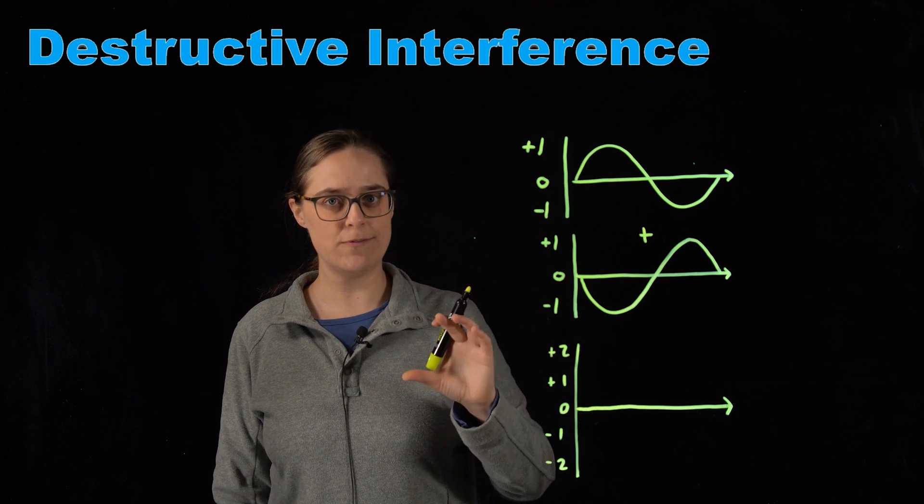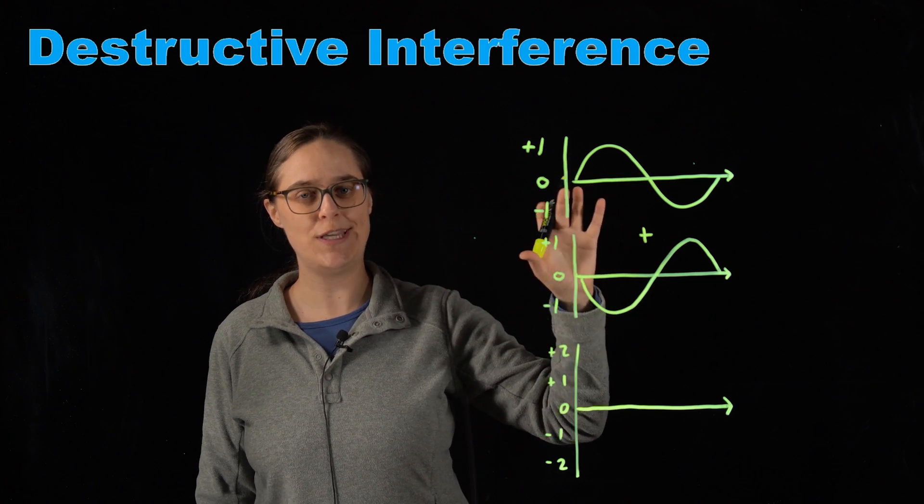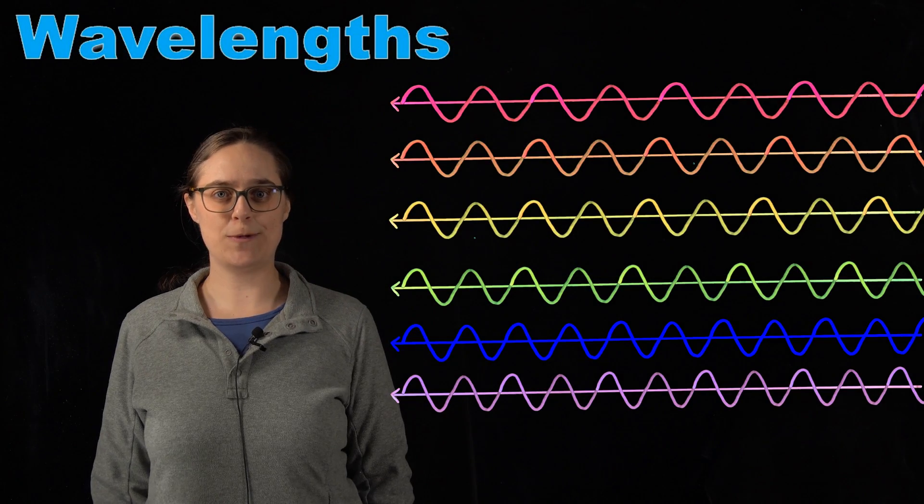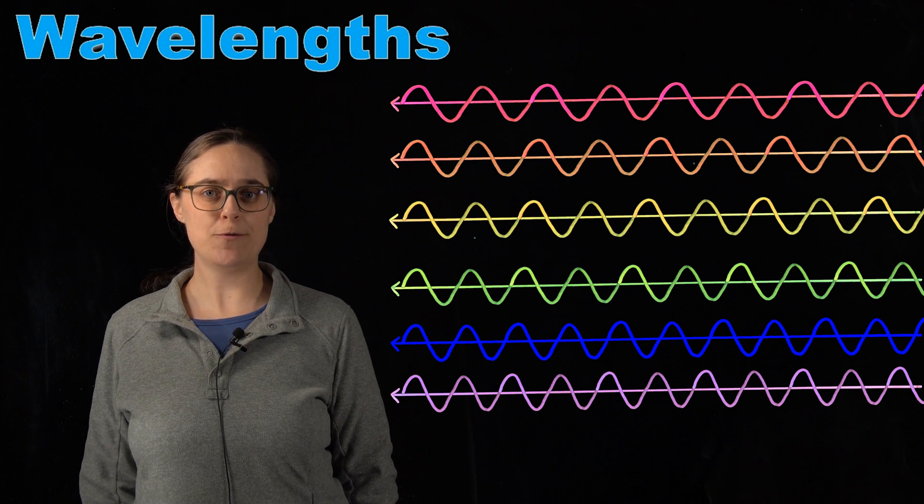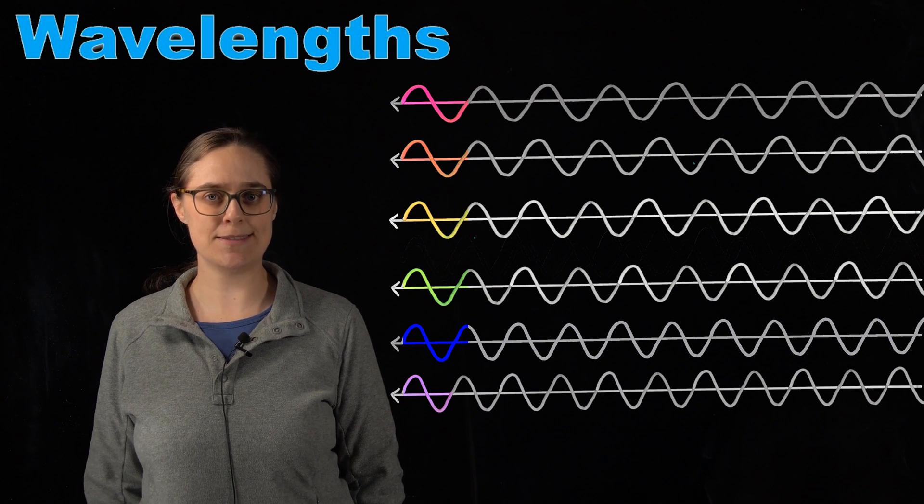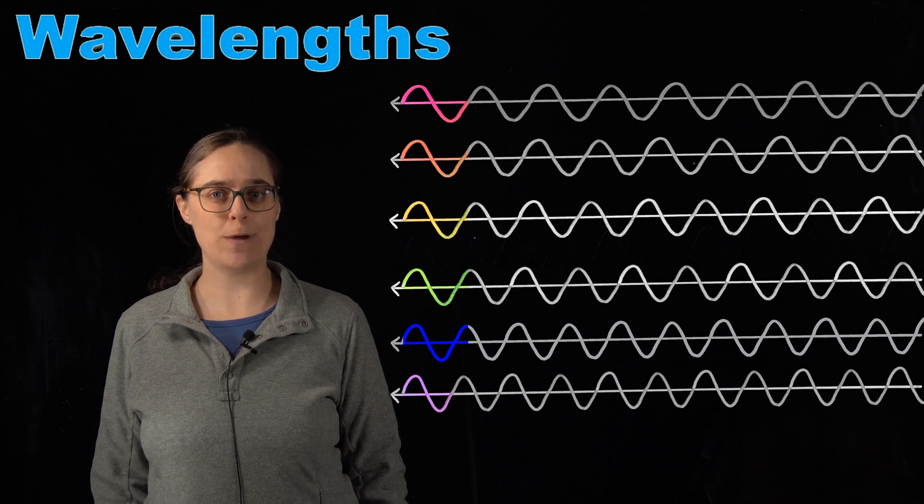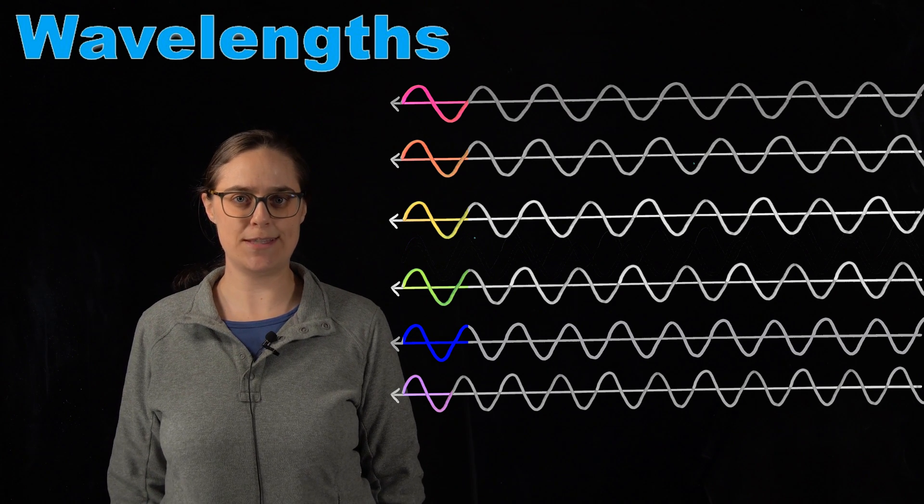So this is destructive interference because these are out of phase and destroying each other. If you look at any of these waves, you can see that they have a repeating pattern to them. But if you find the smallest unit that repeats and measure the length along the axis line, that length is called the wavelength. And wavelength is an important way to characterize these waves.